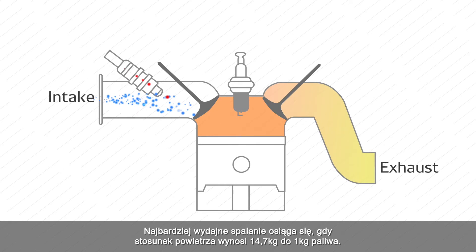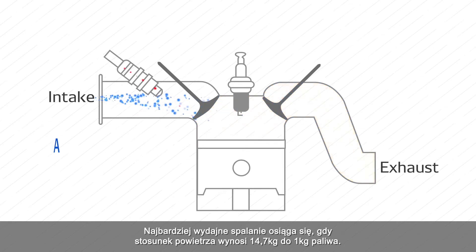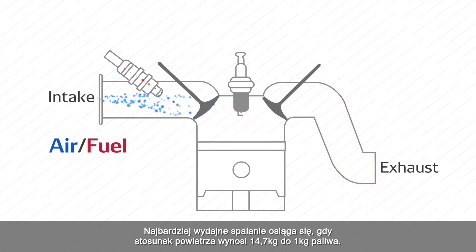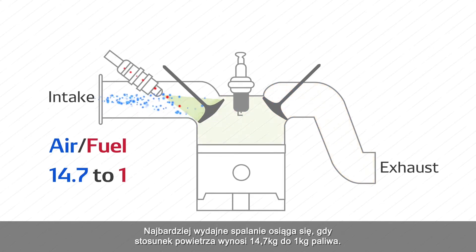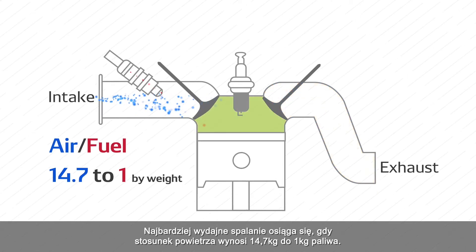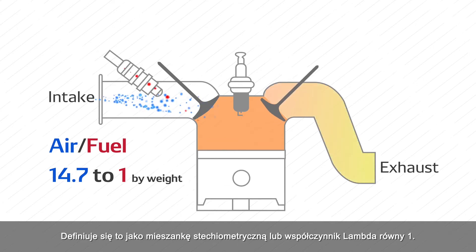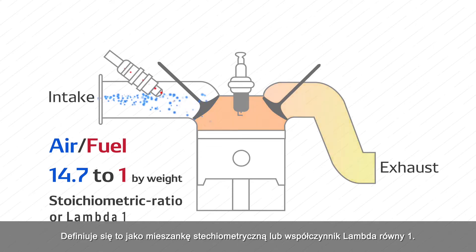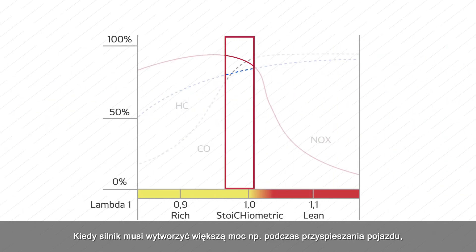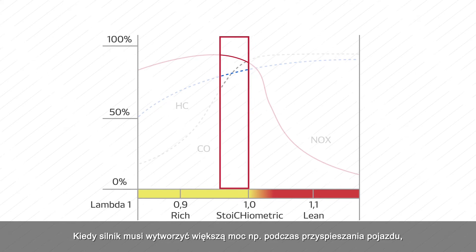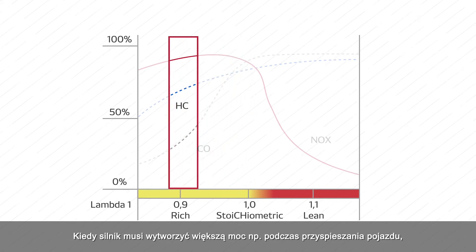The most efficient combustion is achieved when the air-to-fuel ratio is 14.7 to 1 by weight, which is known as the stoichiometric ratio, or lambda 1. When an engine needs to produce more power, such as during vehicle acceleration, a rich mixture is required.